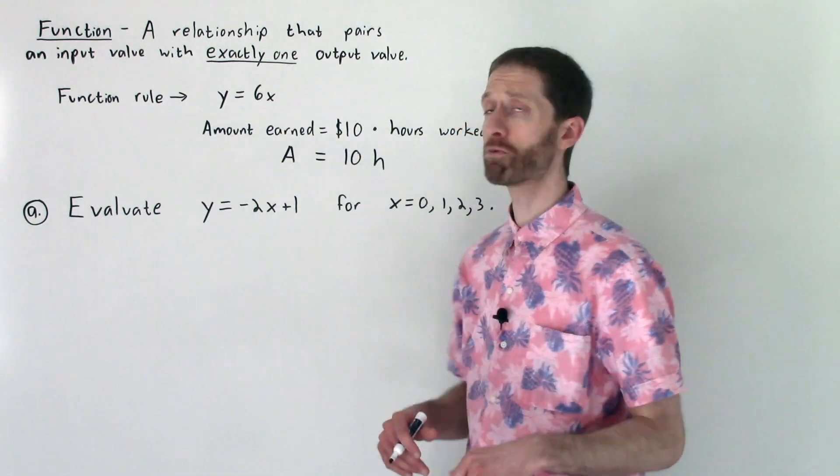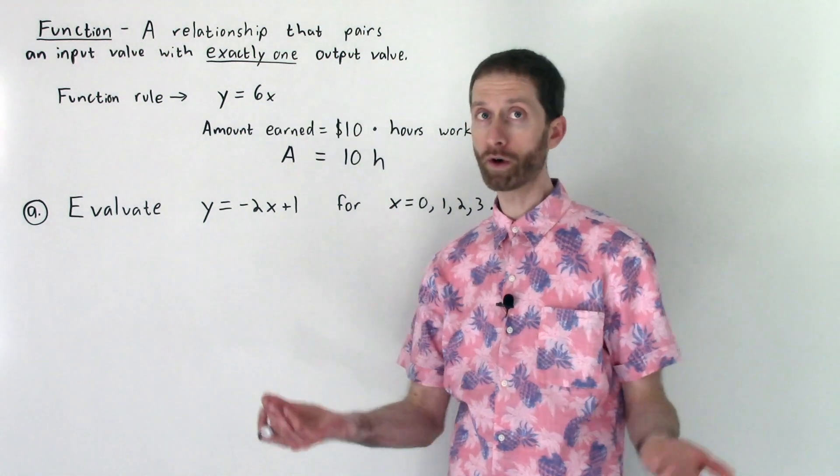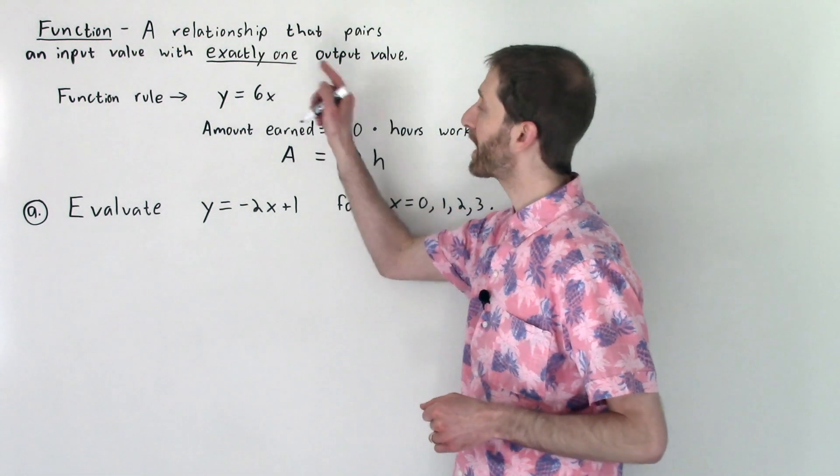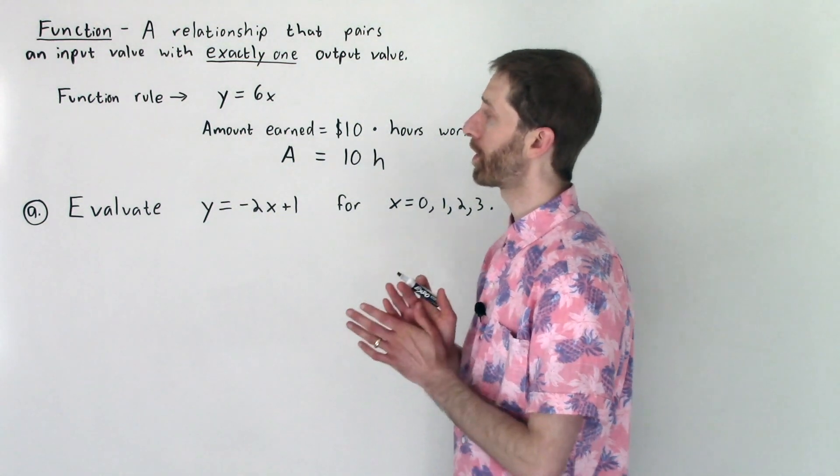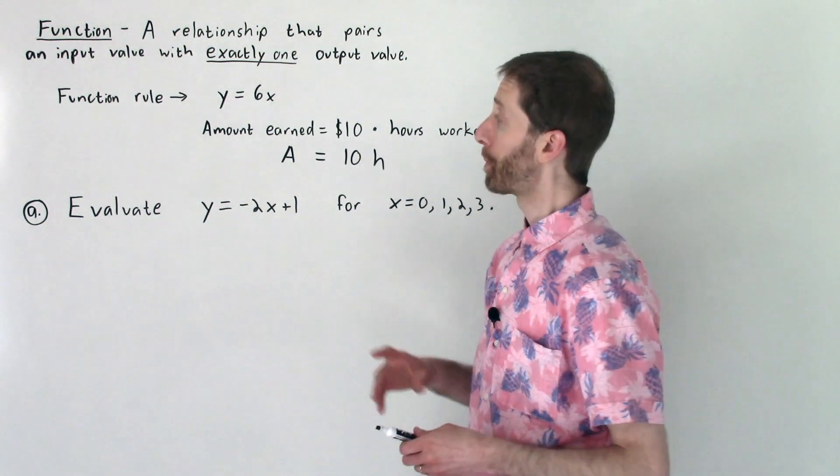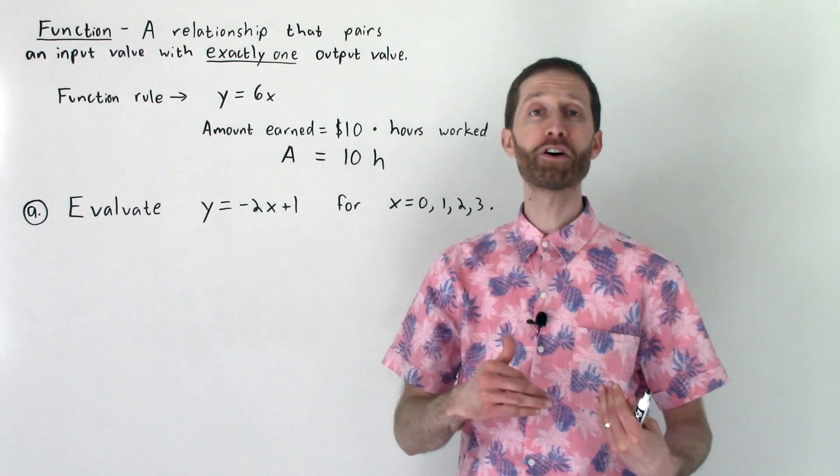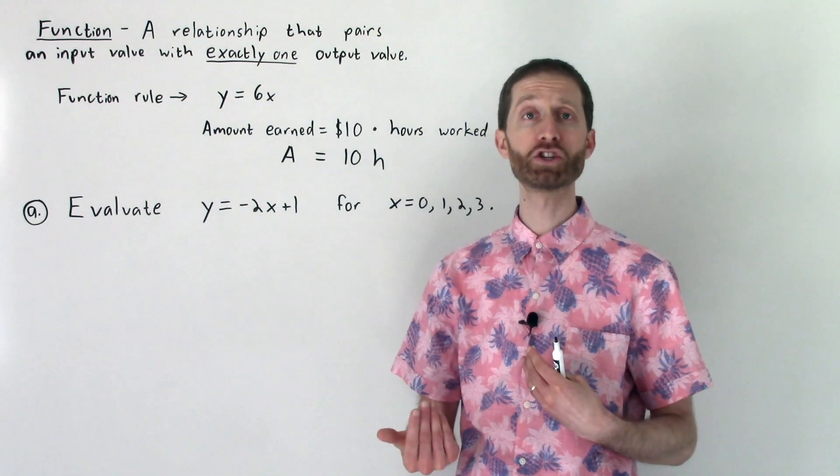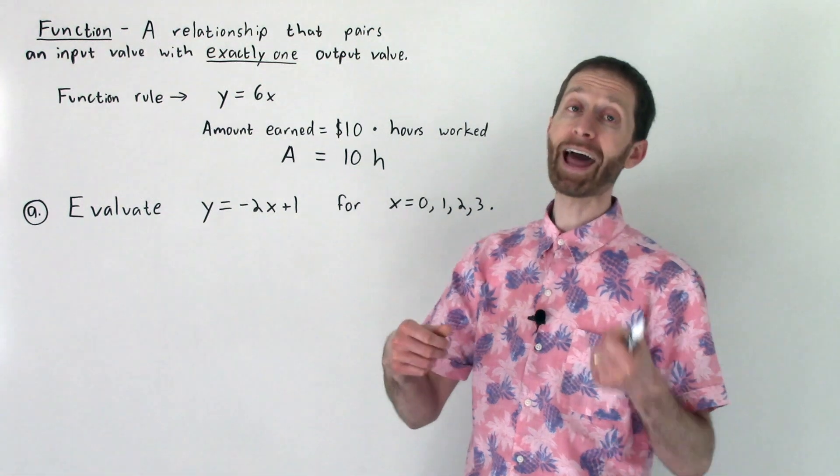We're told that a function is a relationship that pairs an input value or number with exactly one output value. So let me go over exactly what that looks like by talking about function rules. Function rules are rules that describe functions. They show the numerical relationship between numbers that we would put in and numbers that we would get out.